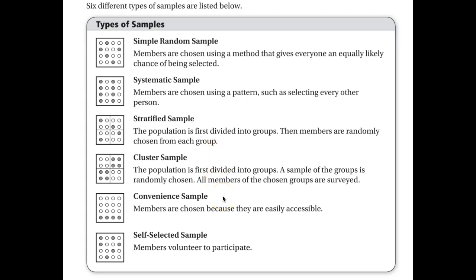A convenience sample is where members are chosen because they're easily accessible. So in the example where I chose all the trees in one corner, maybe they were the easiest to get to. That's a convenience sample.